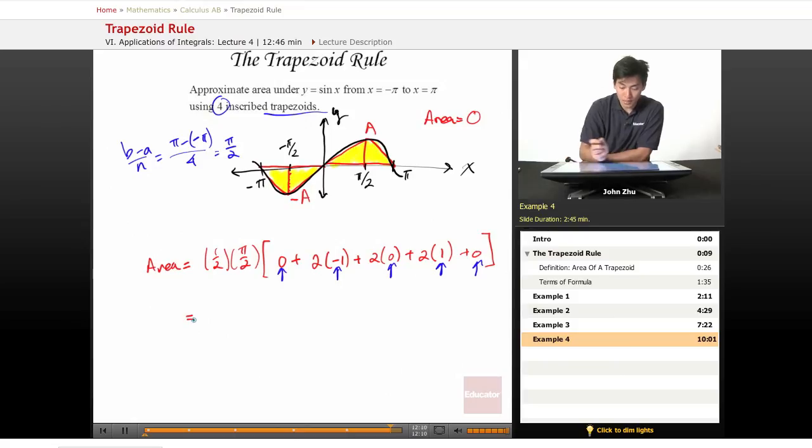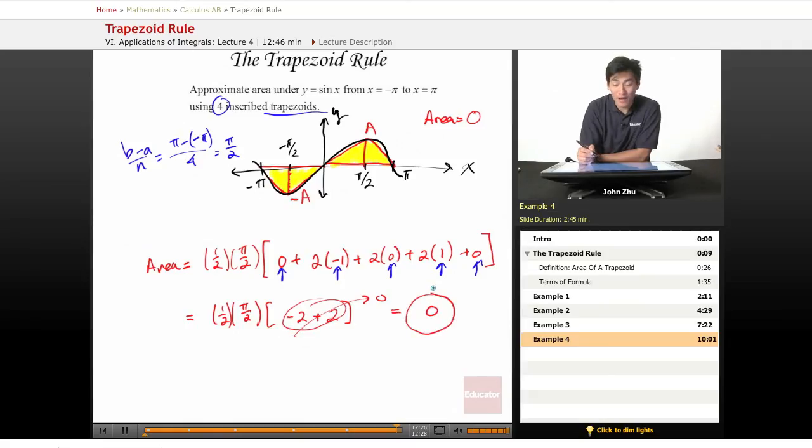And simplifying this, we get one-half pi over 2, negative 2 plus 2, which is zero. So zero multiplied by anything is zero. So we were right by just looking at it graphically.